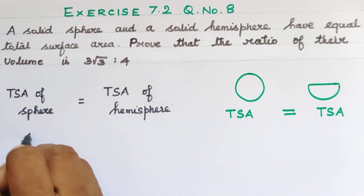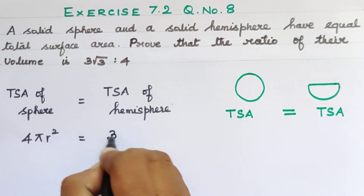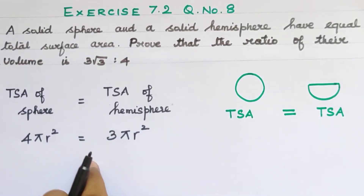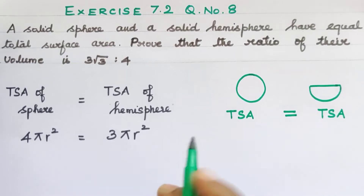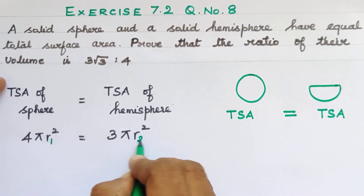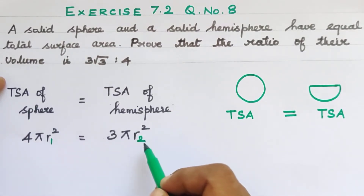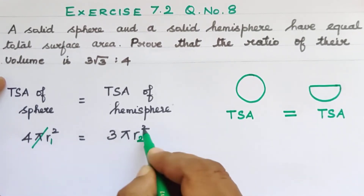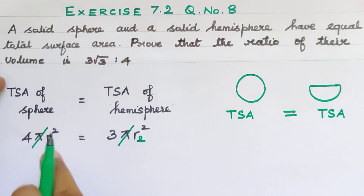Looking at the sphere's TSA formula: since π appears on both sides, we can cancel π. The ratio we need to find — we need R1 squared and R2 squared. So with R1 squared equal to R2 squared, we get a relation involving 3 and 4.